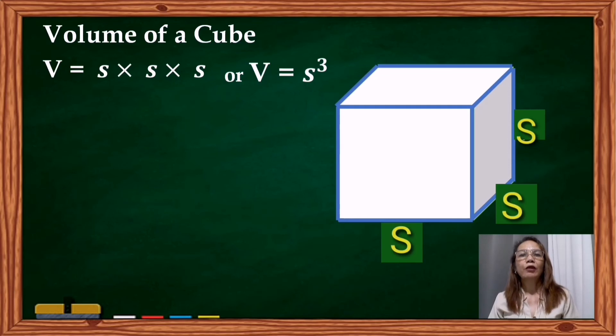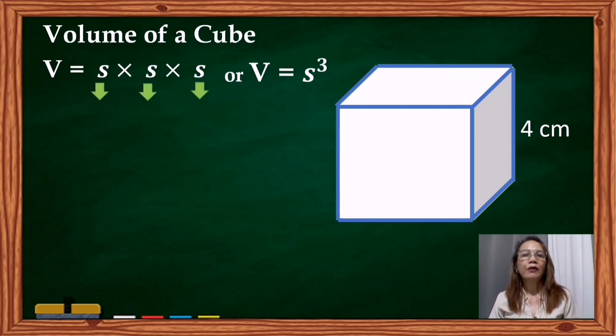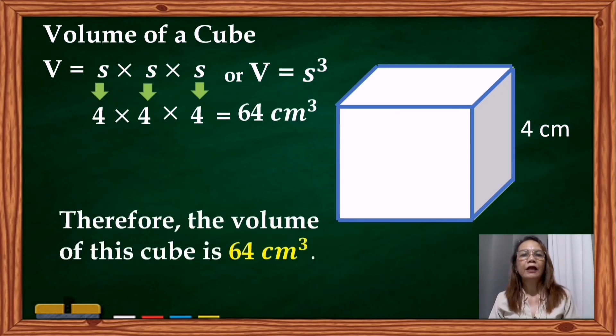So to find the volume of a cube with 4 cm as its side, we will just substitute S with 4. So S is 4. 4 times 4 is 16, times 4 is equal to 64 cm cubed. Therefore, the volume of this cube is 64 cm cubed.